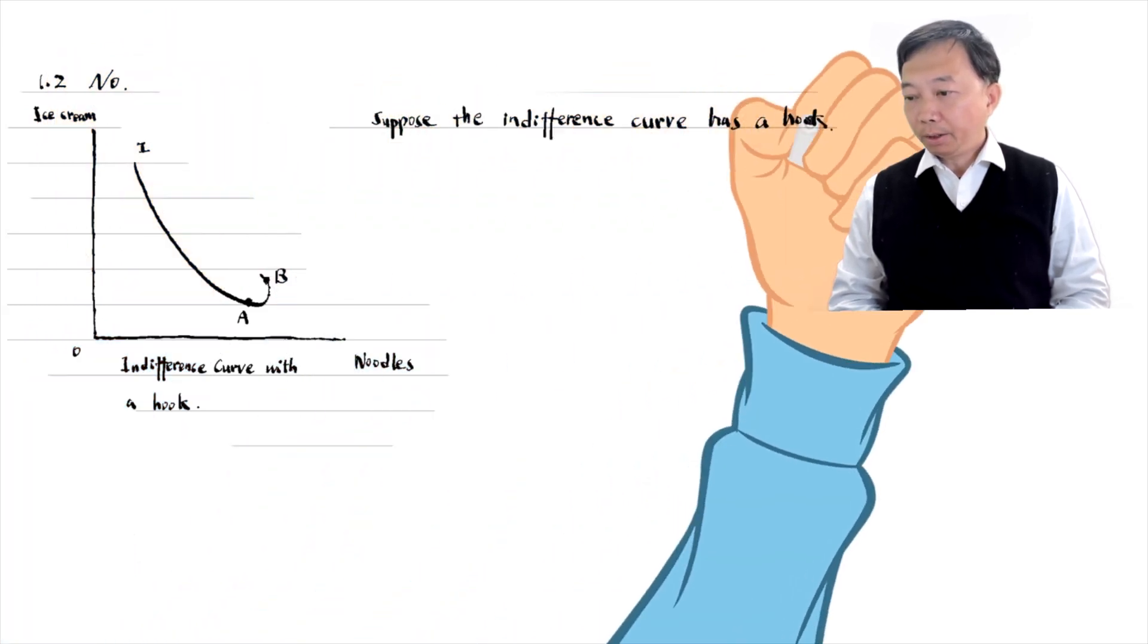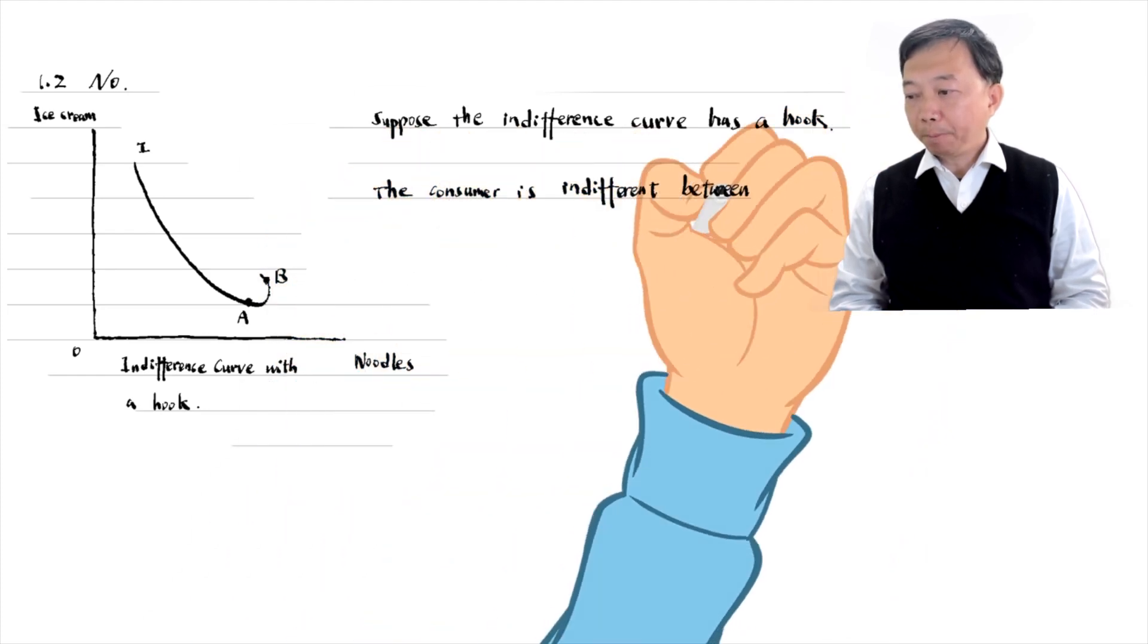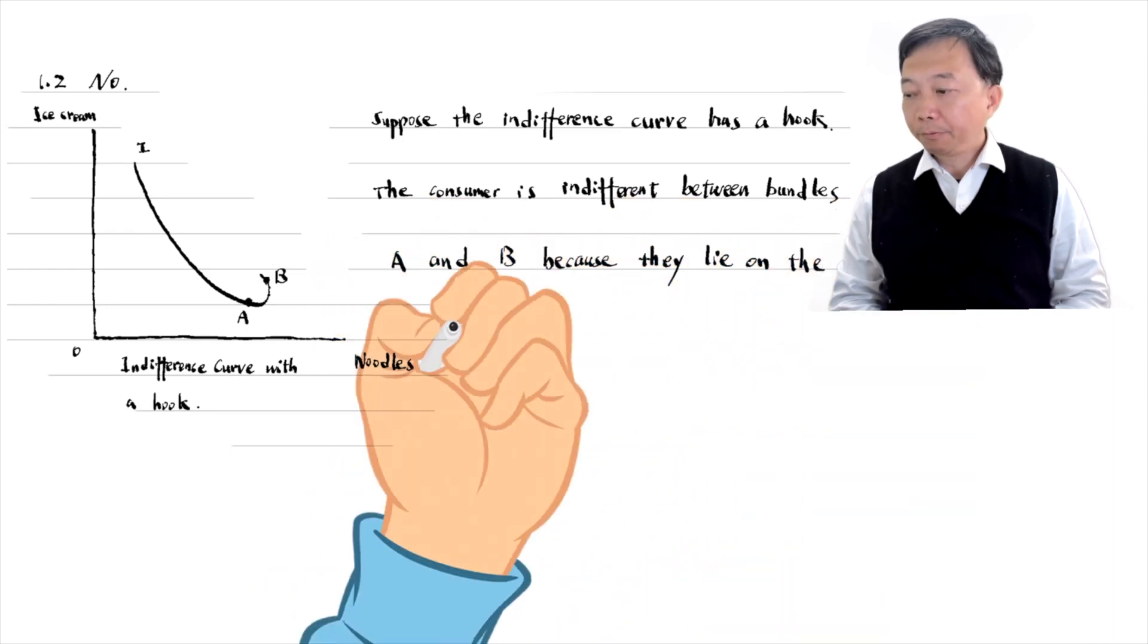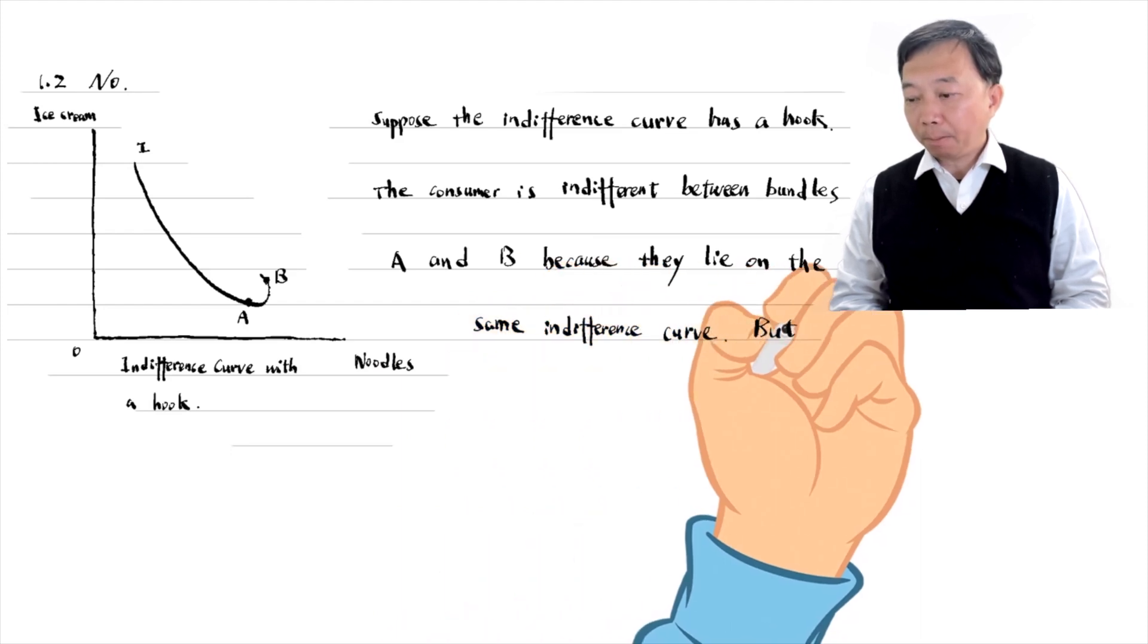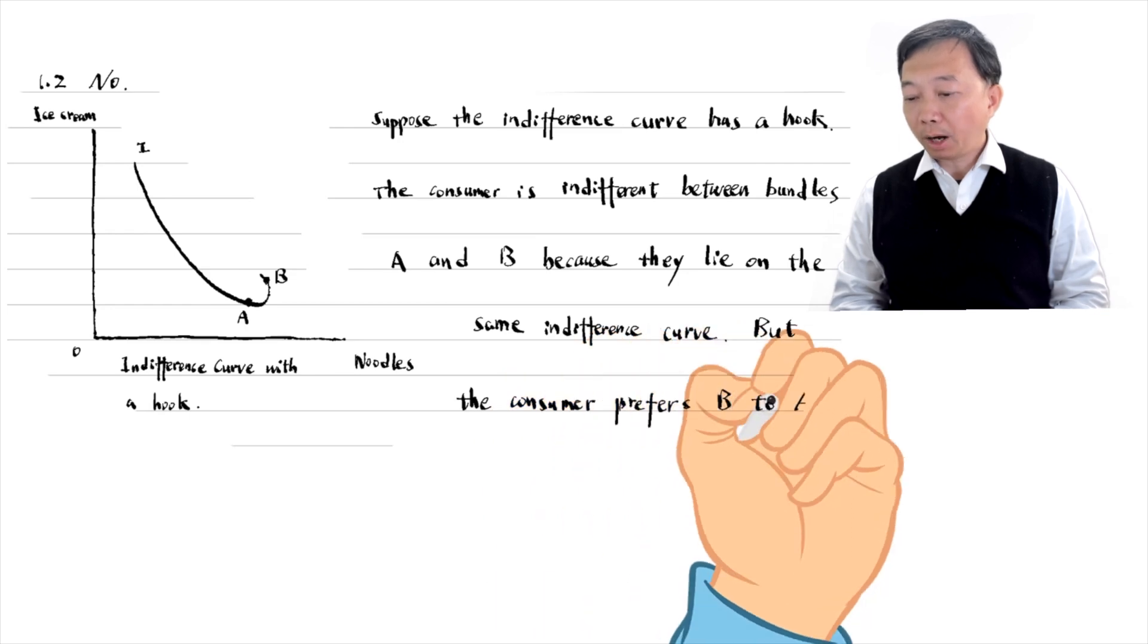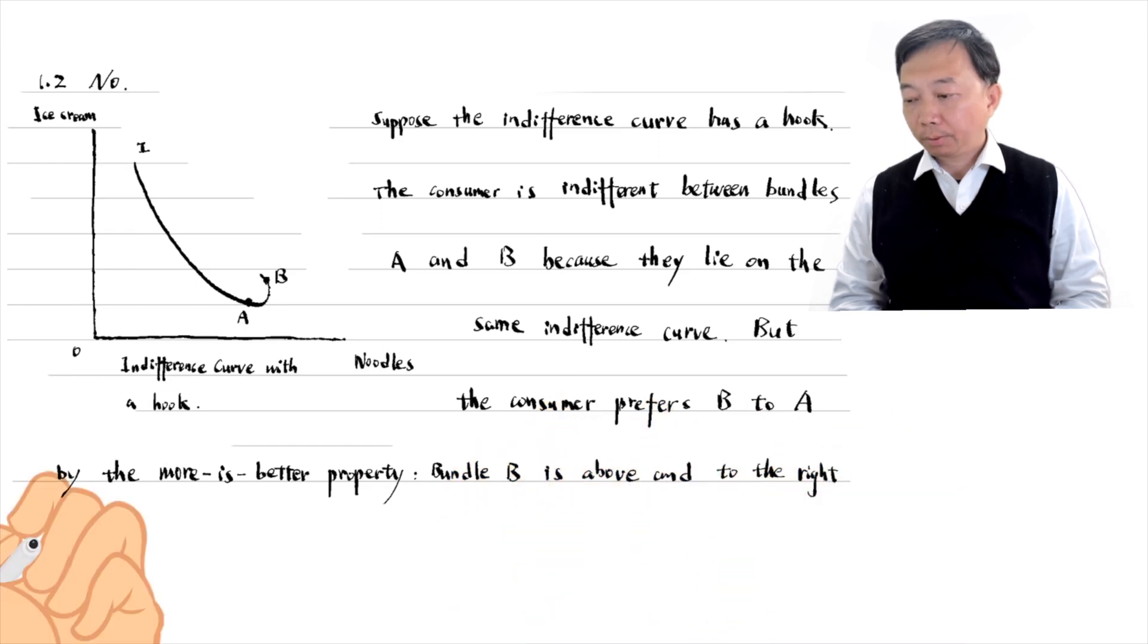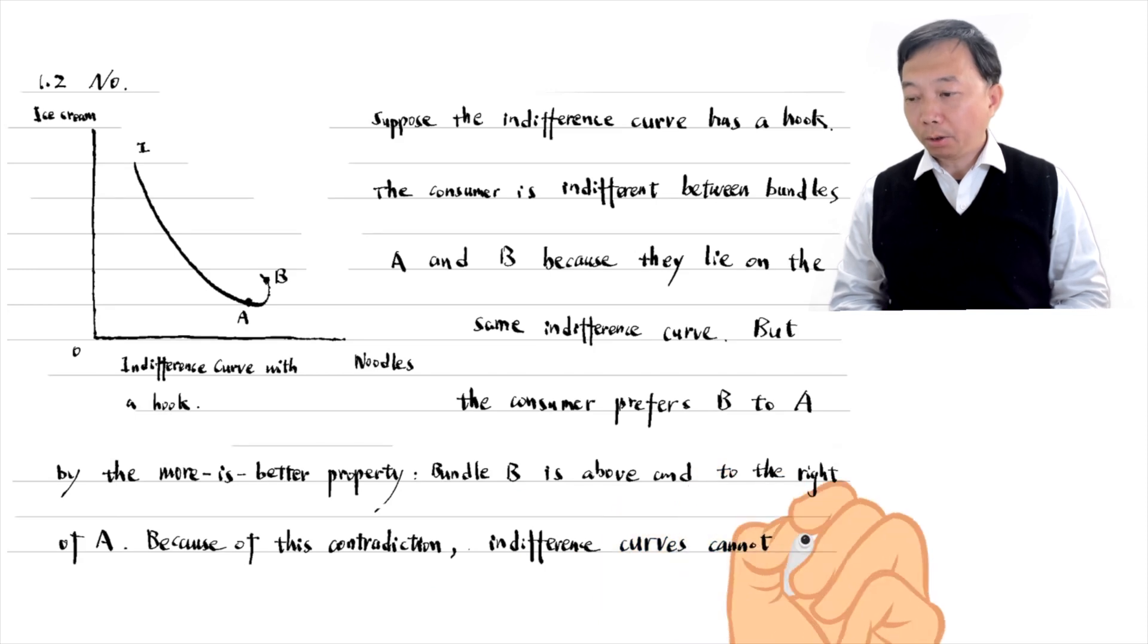The consumer is indifferent between bundles A and B because they lie on the same indifference curve. But the consumer prefers B to A by the more is better property. Bundle B is above and to the right of A. Because of this contradiction, indifference curves cannot bend backward to form a hook.